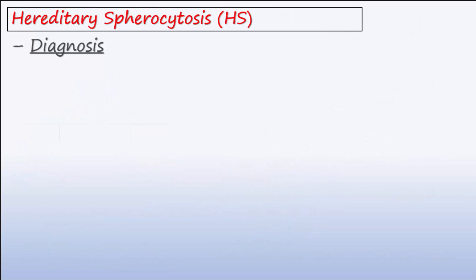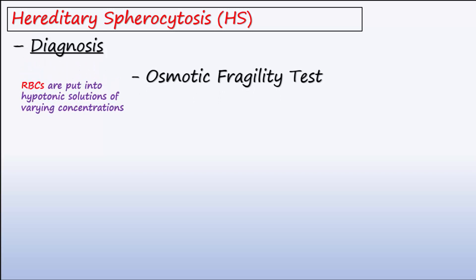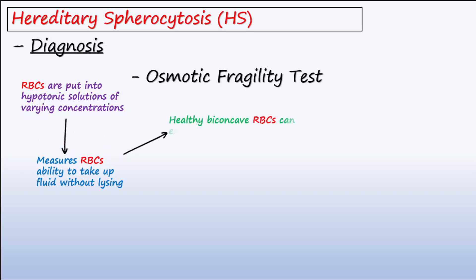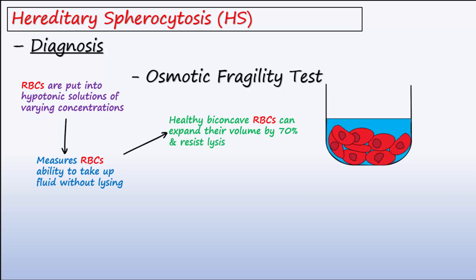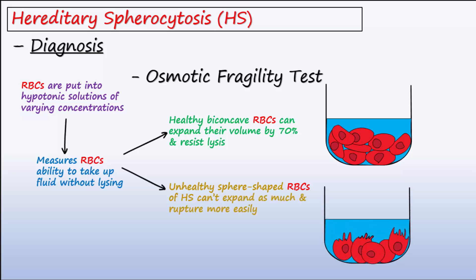In a diagnostic test known as the osmotic fragility test, red blood cells are exposed to a series of hypotonic solutions of varying concentrations. This test is performed to measure the cell's ability to take up fluid without bursting. When red cells are in their healthy biconcave shape, they have the ability to expand their volume by 70% as they take in fluid and resist lysis. However, when RBCs are spherical, they can't expand nearly as much and end up rupturing more easily. The sooner the red cells burst during the test, the greater the osmotic fragility of the cells.